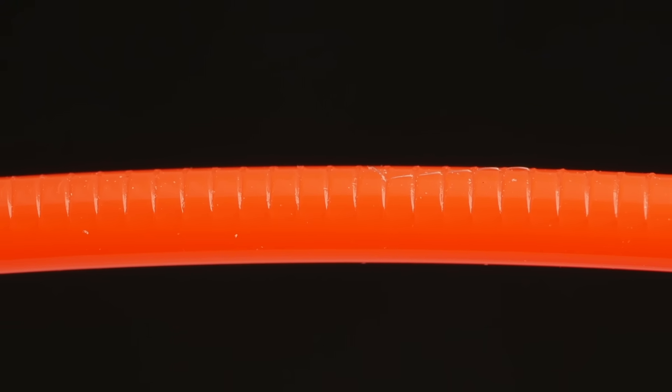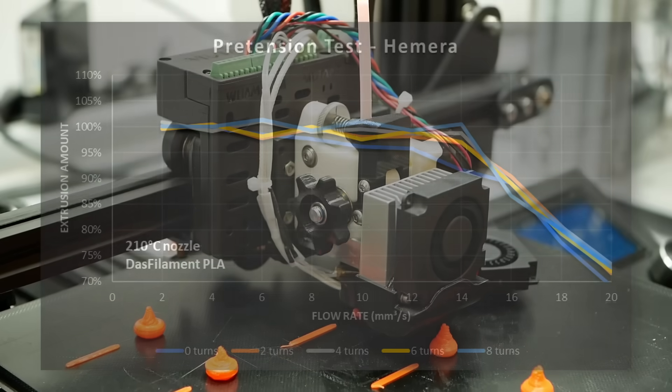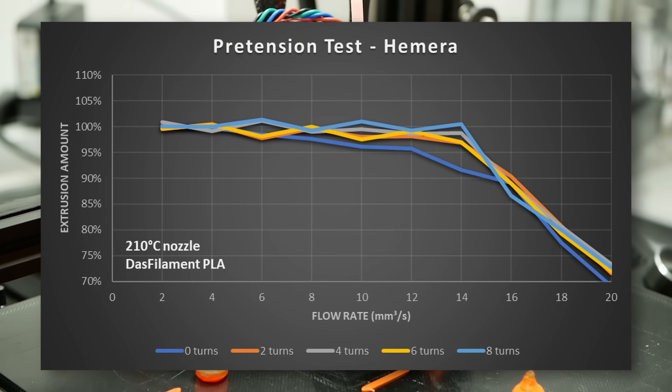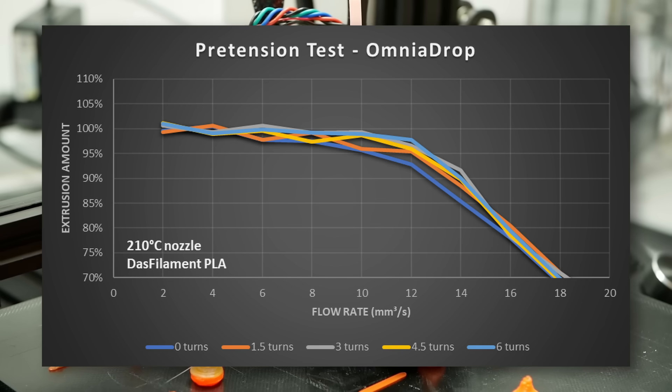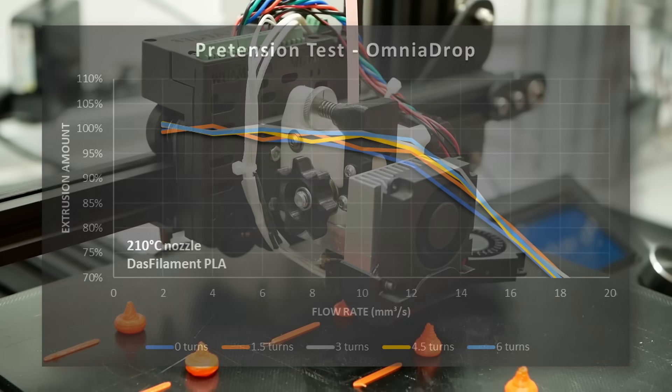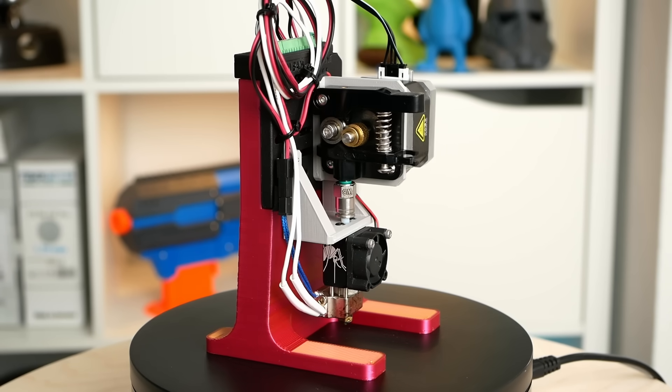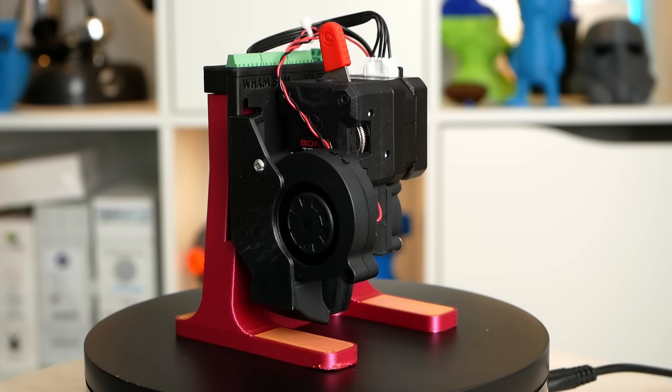The Hemera and the Omnia drop extruder behaved very similarly, with slightly lower performance level at the lowest setting, but then very consistent extrusion values if you slightly increase the pretension. Before we take a look at the probably most common extruder used on millions of Creality and Ender-style printers, let's look at Bontech's LGX.